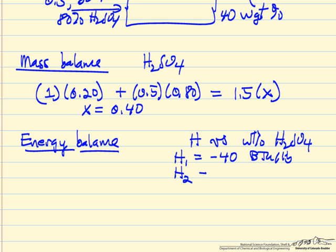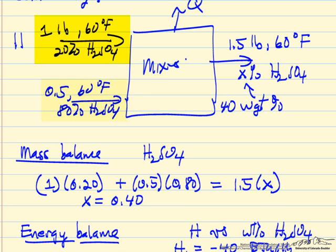And H3, the exit, minus 98 BTUs per pound. So I'm going to call this one H1, this one H2, and then the exit H3.